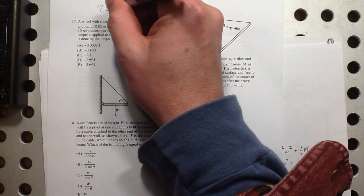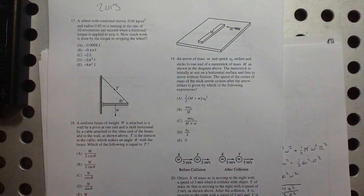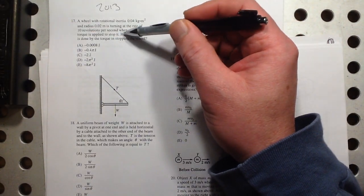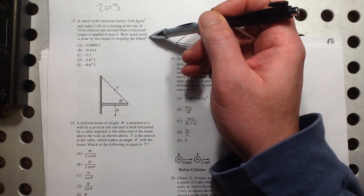Hey, here's some more of 2013. A wheel with rotational inertia of this and a radius of that is turning at a rate of 10 revolutions per second when a frictional torque is applied to stop it. How much work is done?